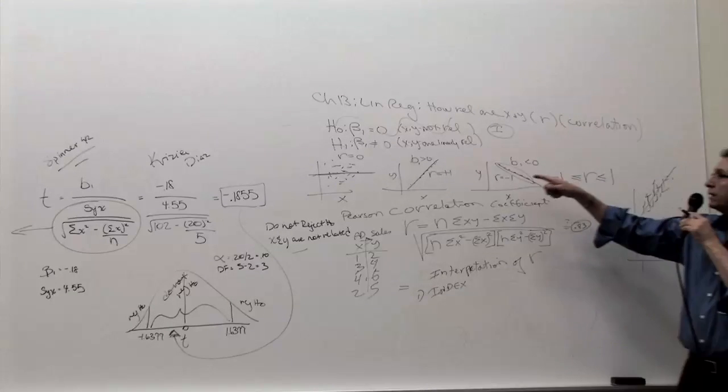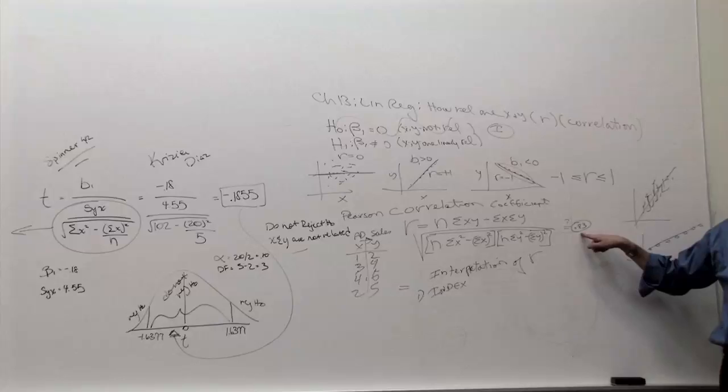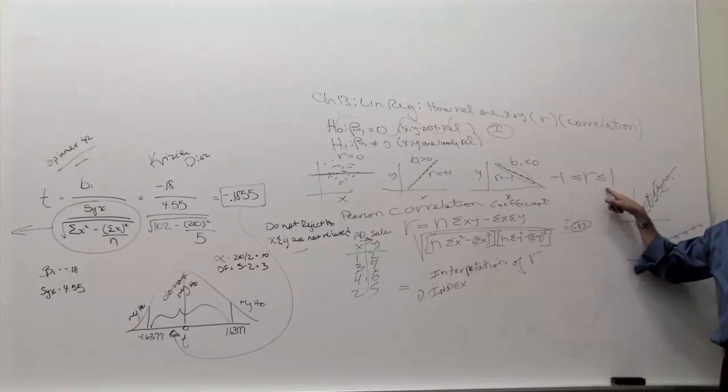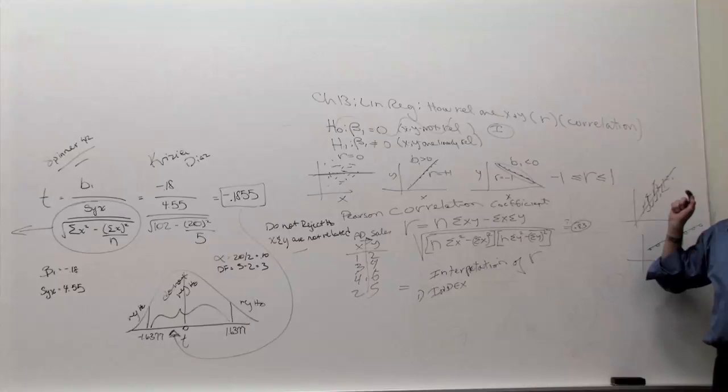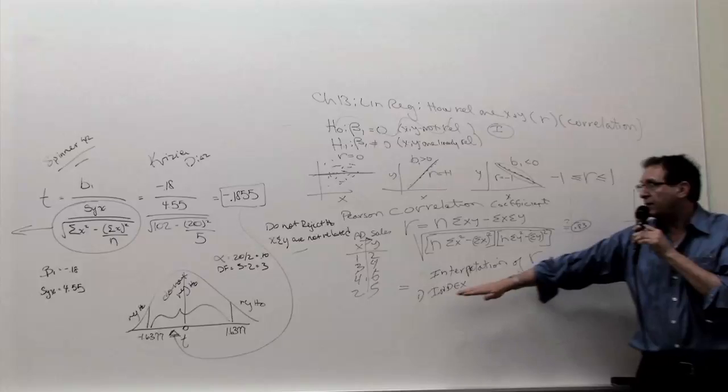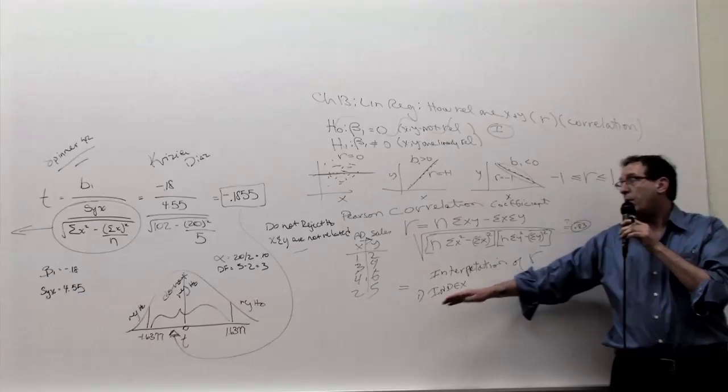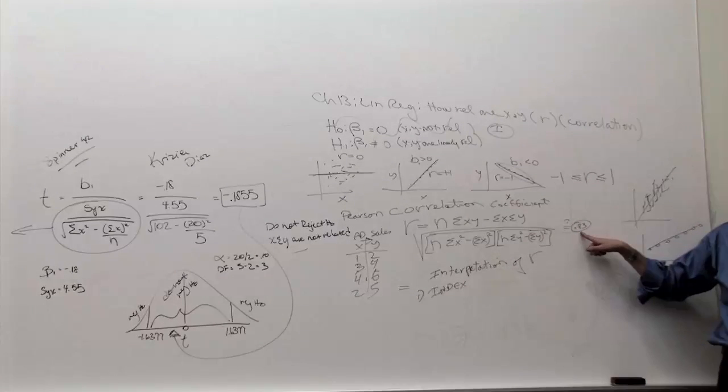So in our case, the correlation looks pretty high. It's 0.83, pretty close to 1. Therefore, if you only had this interpretation by itself, you might jump to the conclusion that—what? Are x and y related or not related?